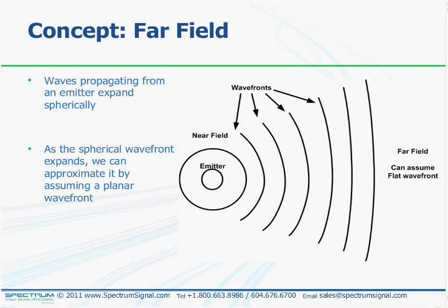This is analogous to a camera focused on infinity—whether your target is 100 meters or 100 miles away, you're still focused at infinity. One exception is focused array processing, which assumes a spherical wavefront and can use the non-flat wavefront to estimate the distance from an emitter.